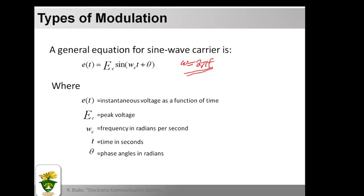The general equation for a sine wave carrier is: e(t) = Ec sin(ωc·t + θ), where e(t) is the instantaneous voltage as a function of time, Ec is the peak voltage, ωc is the frequency in radians per second. If given frequency in Hertz, first convert to radians. t is time in seconds, and θ is the phase angle in radians.